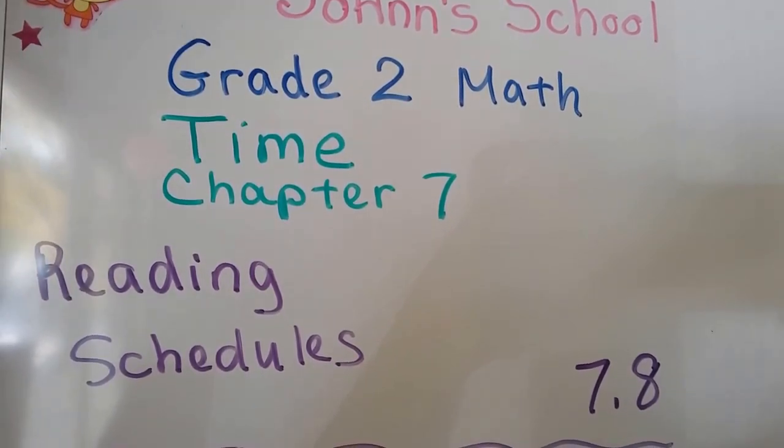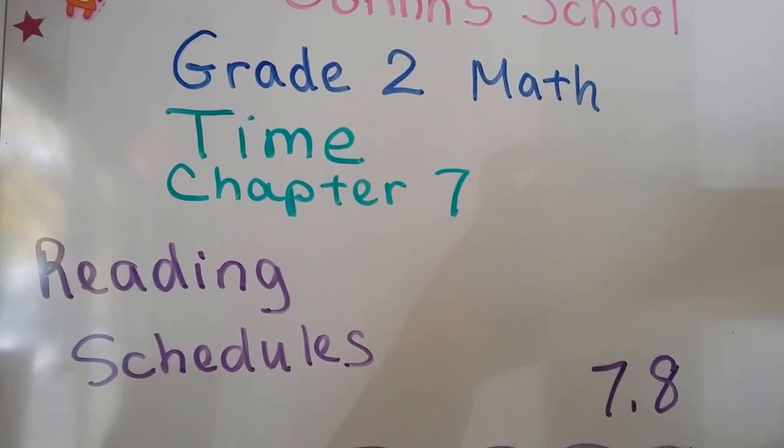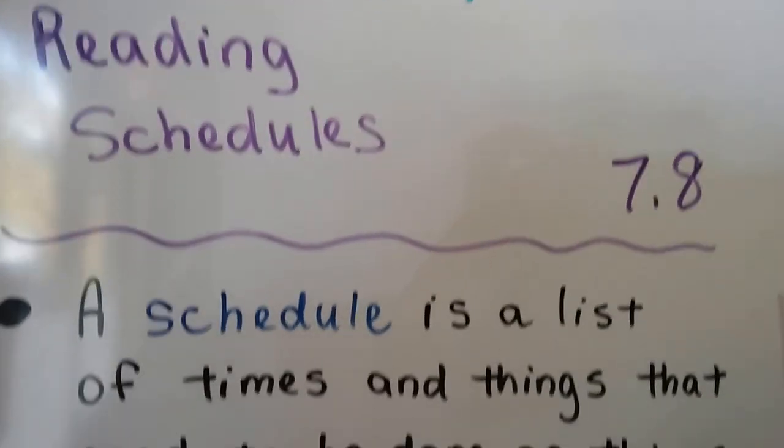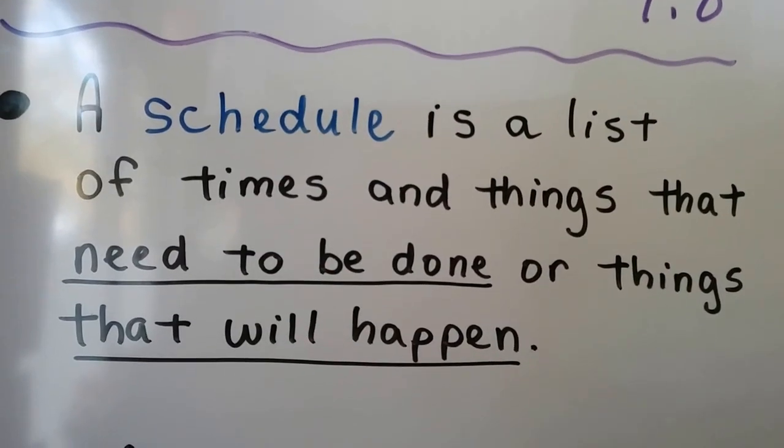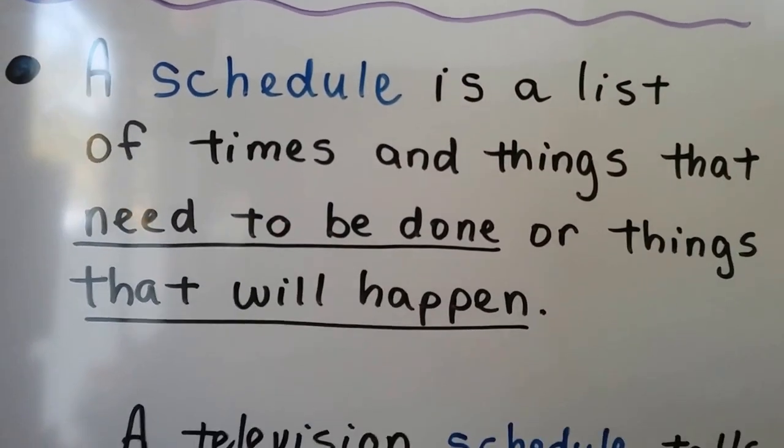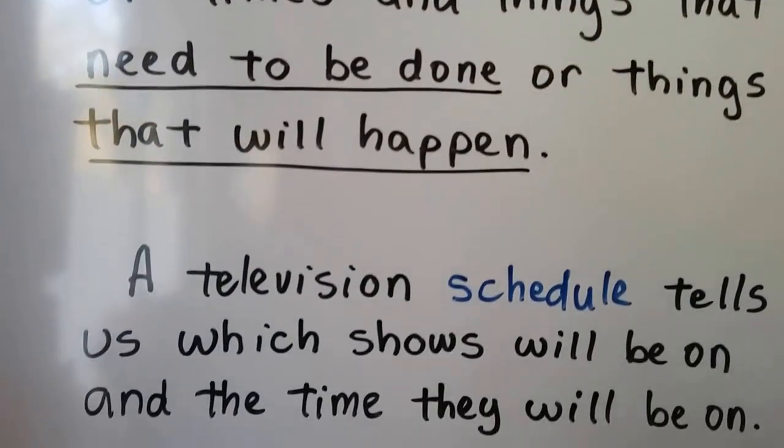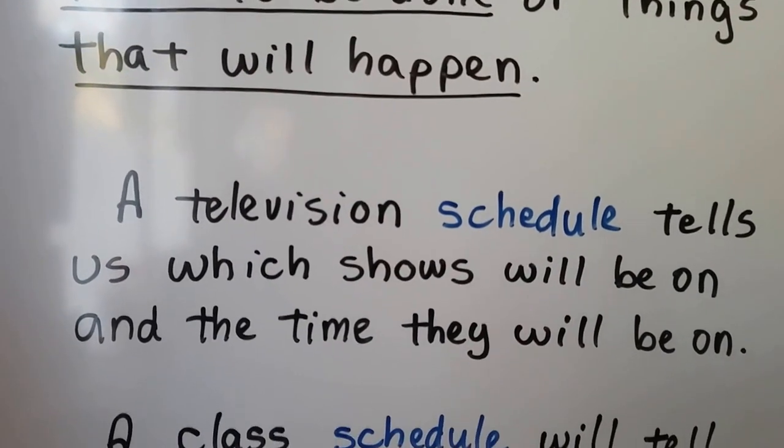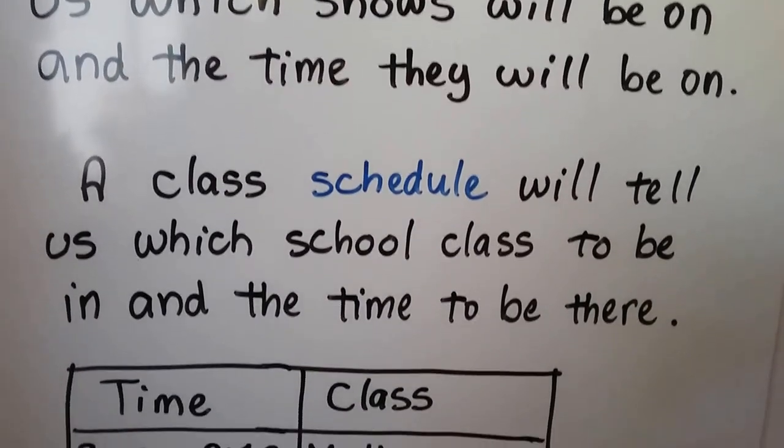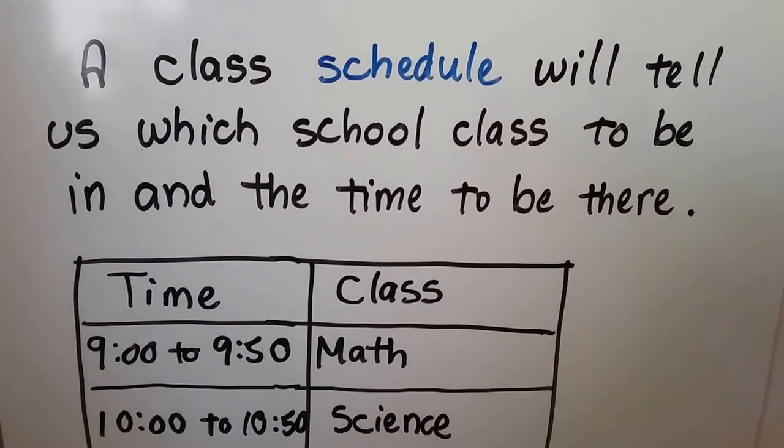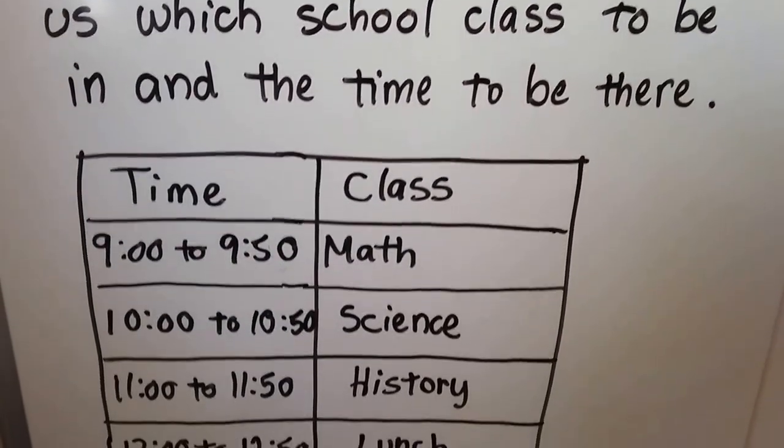Reading schedules. I'm going to learn about how to read a schedule. This is lesson 7.8. A schedule is a list of times and things that need to be done or things that will happen. A television schedule tells us which shows will be on and the time they'll be on. A class schedule will tell us which school class to be in and the time to be there.